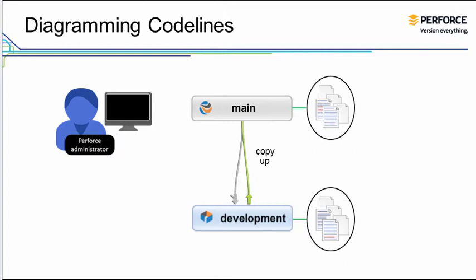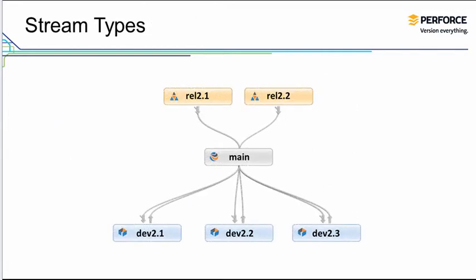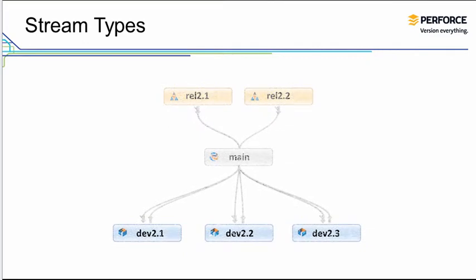The stream graph displays stream relationships and the workflow required to integrate changes across streams. A stream's type helps you understand how a stream is used. In streams, there are three predefined stream types: mainline, development, and release.